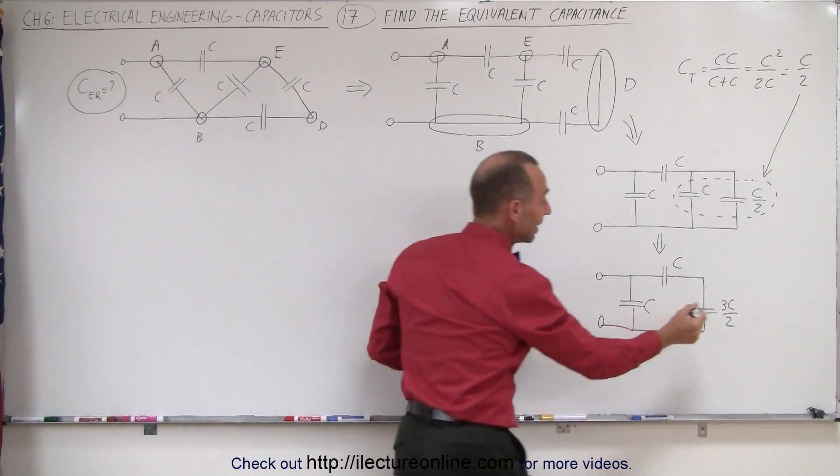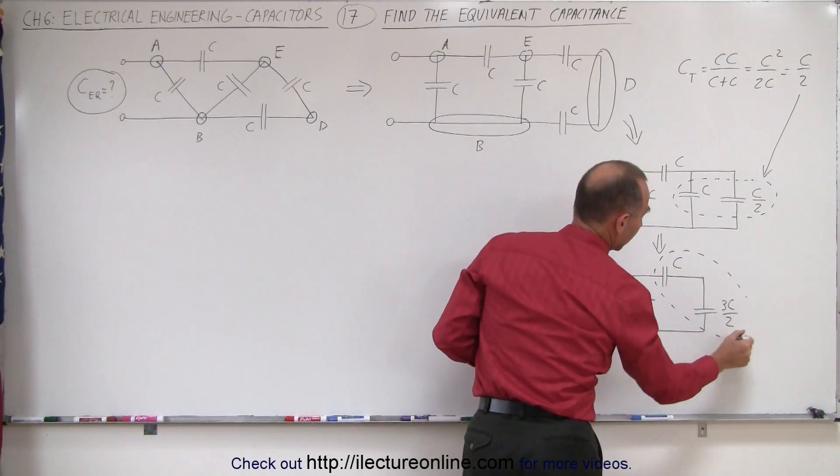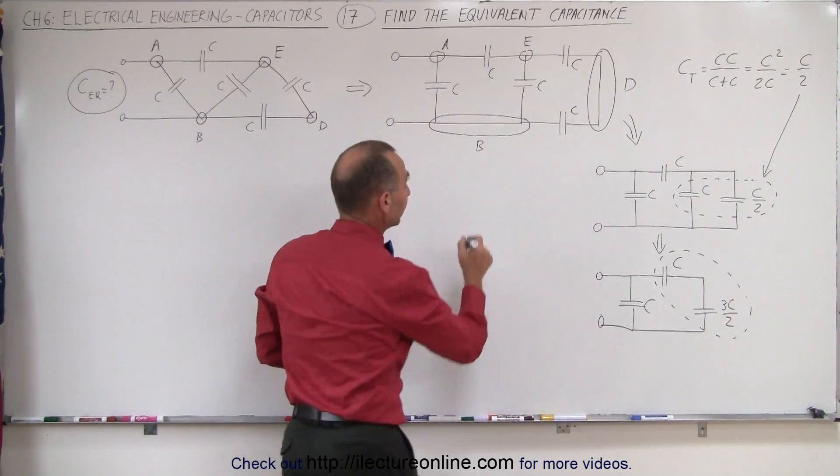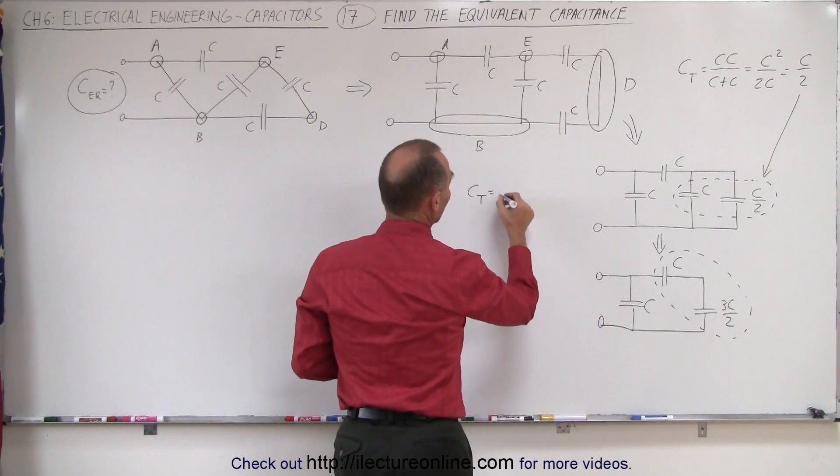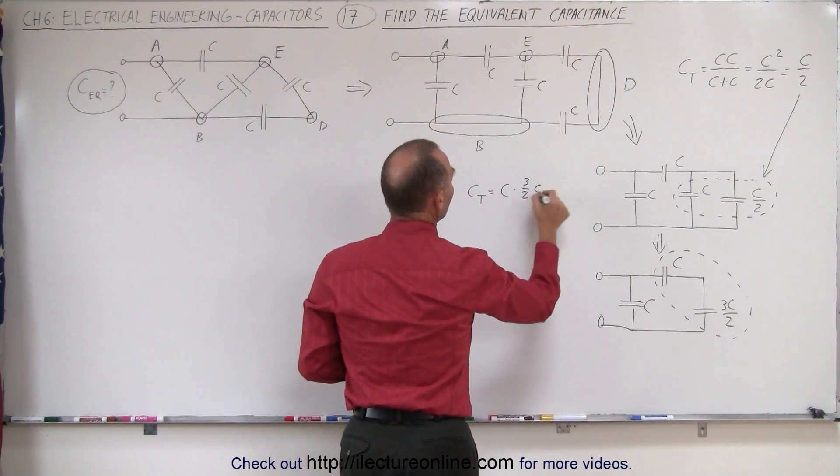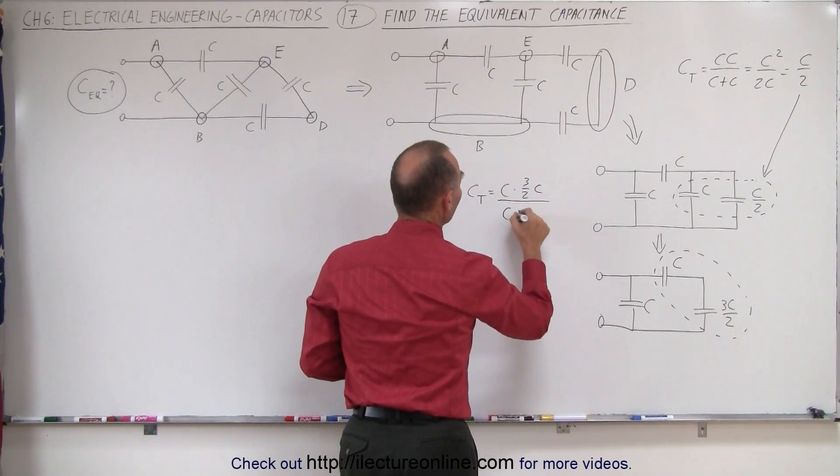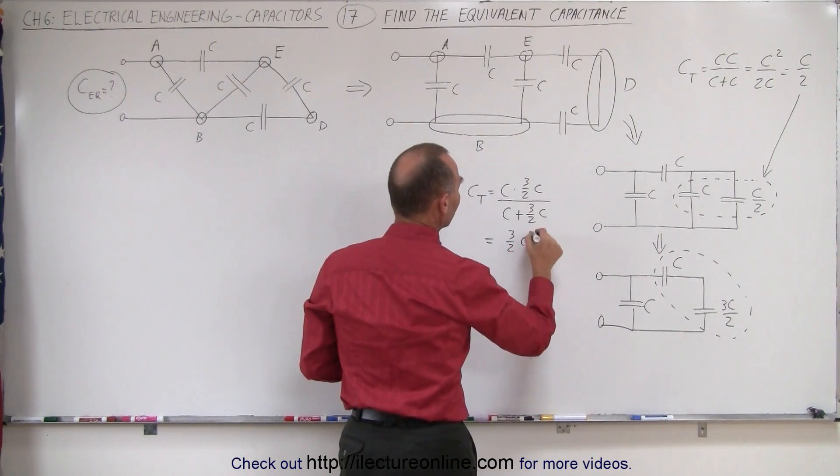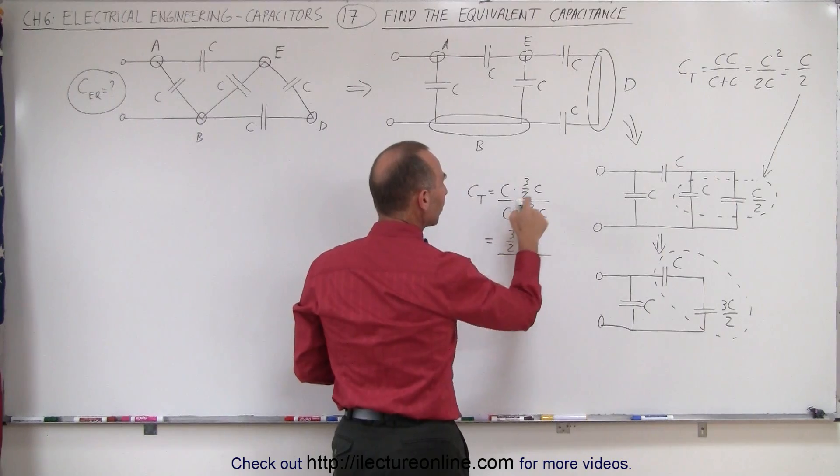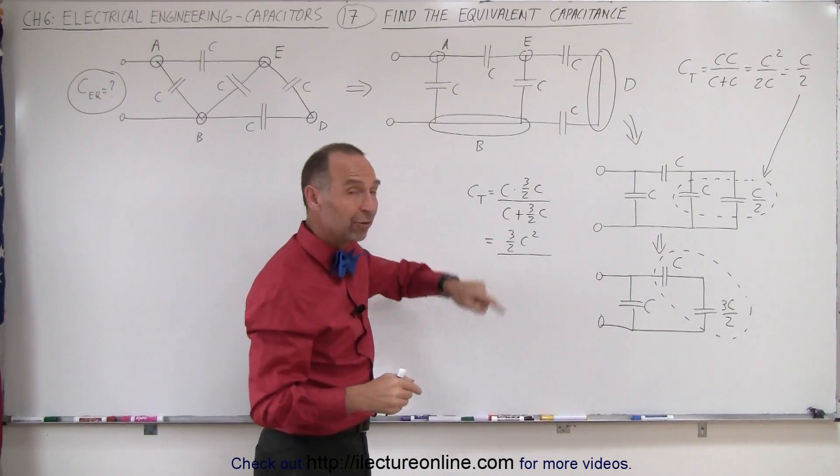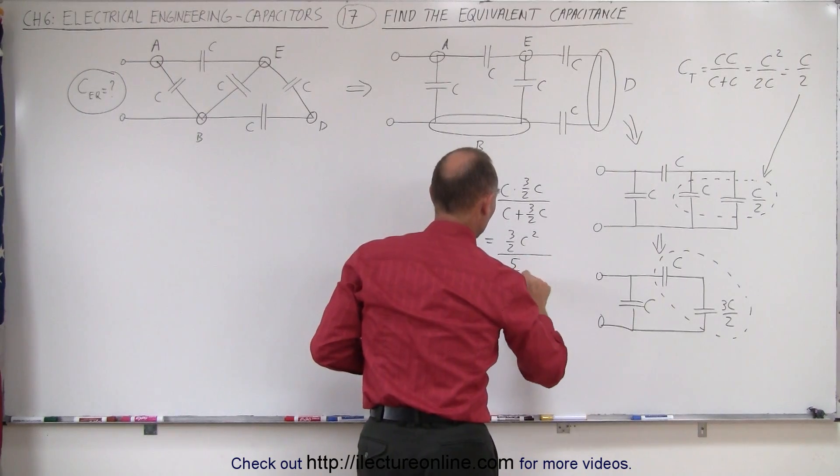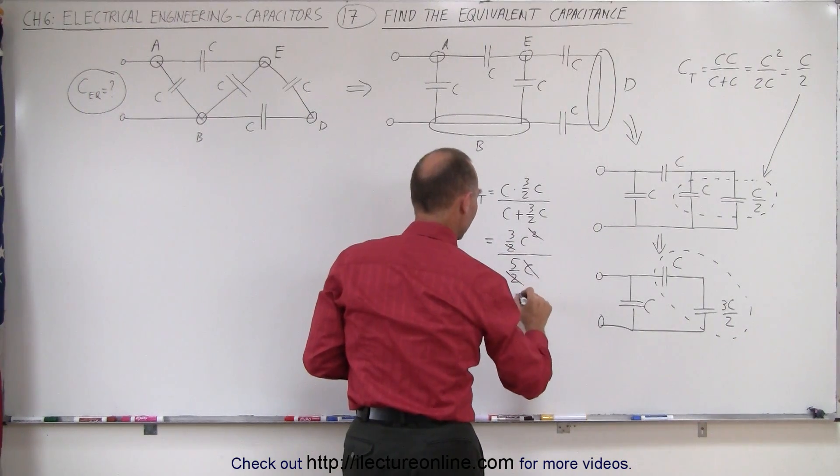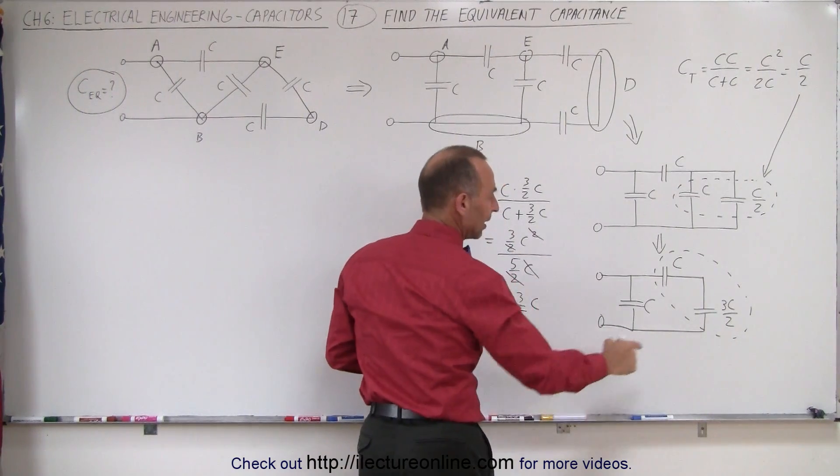Next, I can combine these two capacitors. Now those are, again, in series. So when I combine capacitors in series, I have to do the product over the sum rule again. I can take C total is equal to the product, which is C times 3 over 2C divided by the sum of the two, C plus 3 over 2C. In other words, this becomes 3 divided by 2C squared divided by C plus 3 half C. That would be 2 halves plus 3 halves, which is 5 halves C. 5 over 2C. And this C cancels out with this C. This two cancels out with that two. This becomes 3 divided by 5 times C. And that will be those two combined.